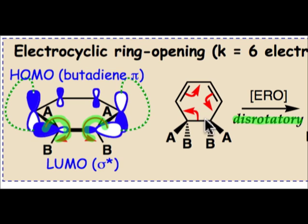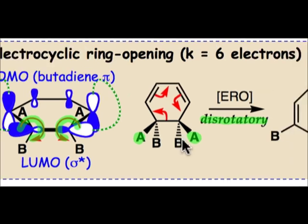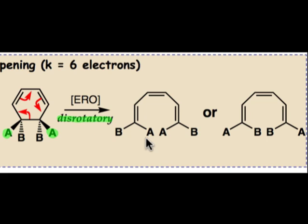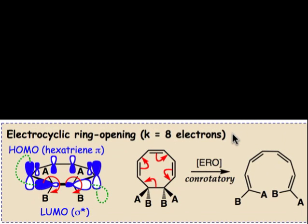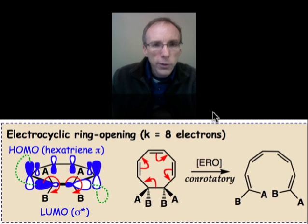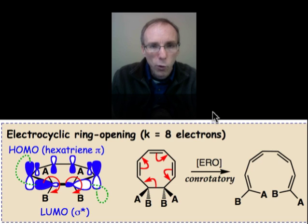If we started with a molecule that had substituents A in a cis orientation relative to one another, the two possible products by the disrotatory pathway will either put both of the A's inward or both of the A's on the outside. We'll never get the product in which one A is on the inside and one A is on the outside. Now I want you to work this one on your own, and in the next webcast, we're going to take a look at the reverse reaction — the electrocyclic ring-closing reaction — and do the frontier orbital analysis for that elementary step.